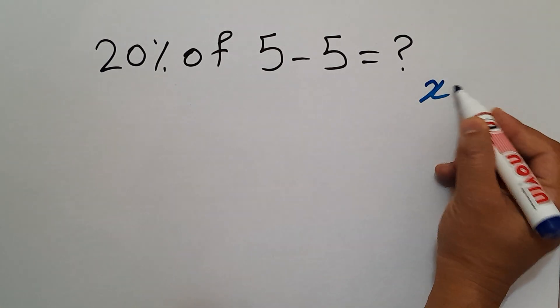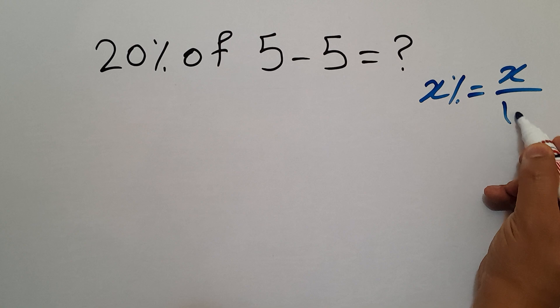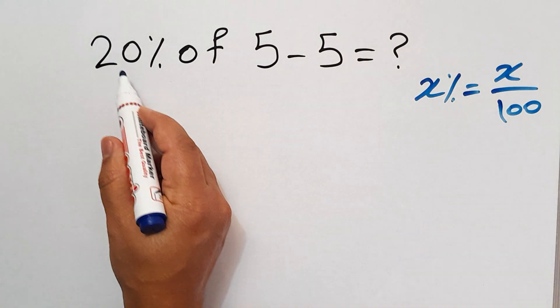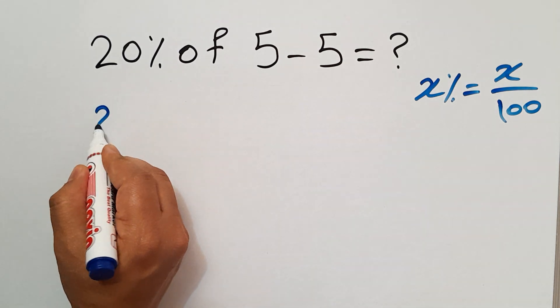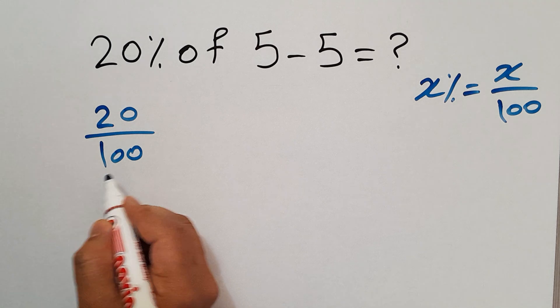X percent equals X over 100. We applied this formula here, so 20% equals 20 over 100 according to this formula.